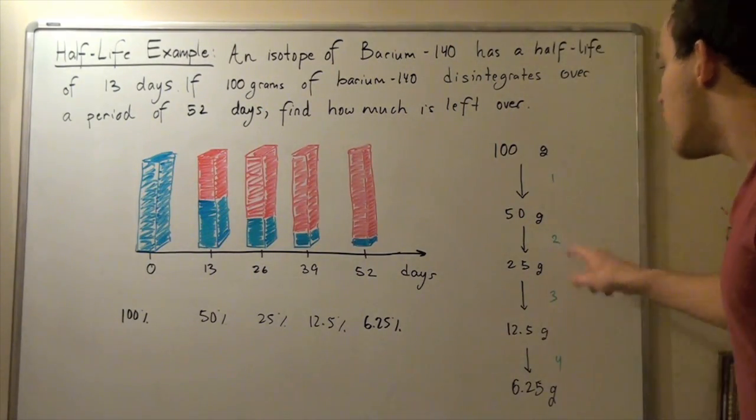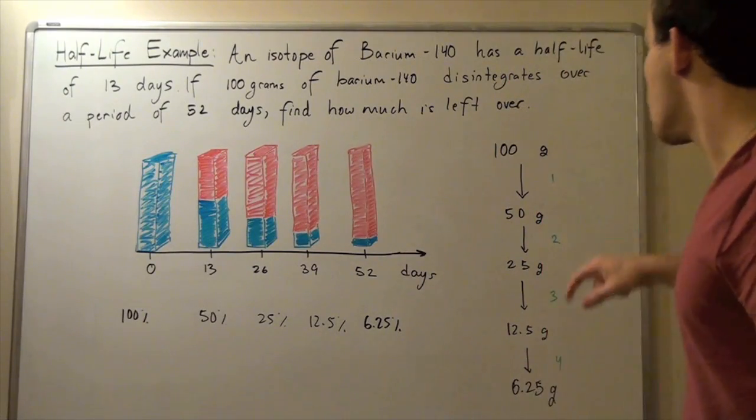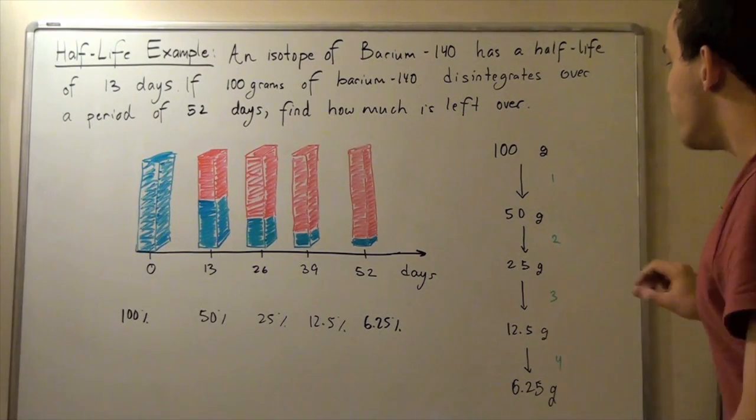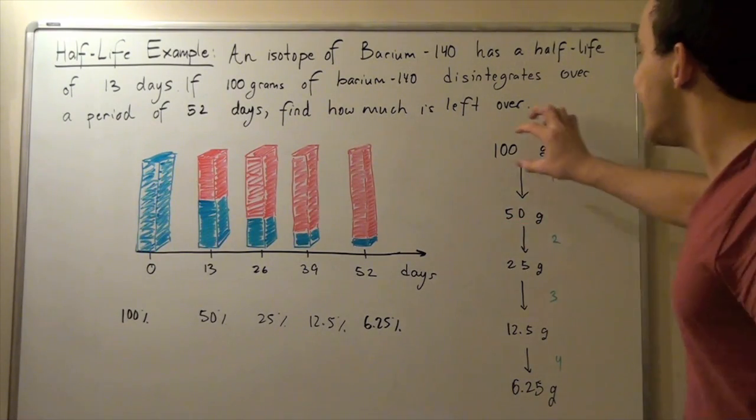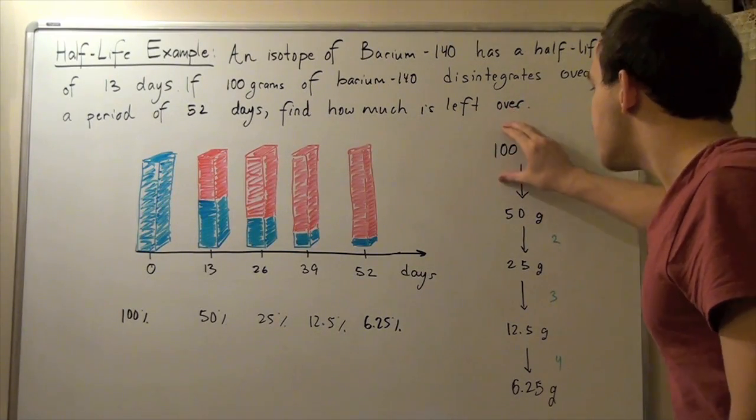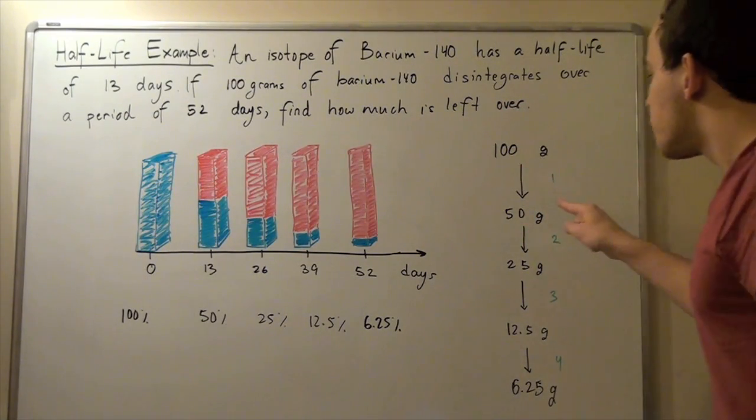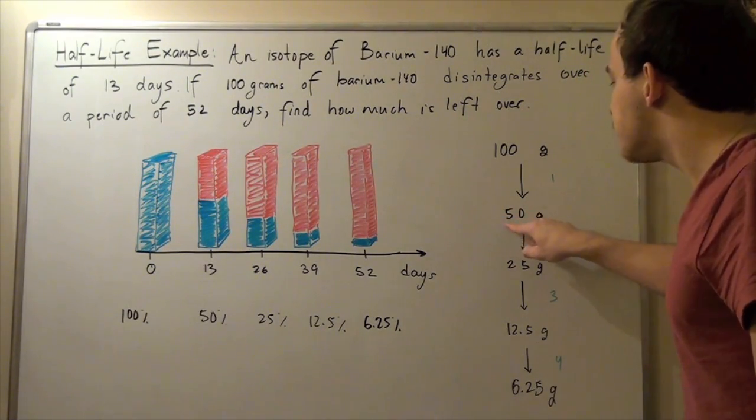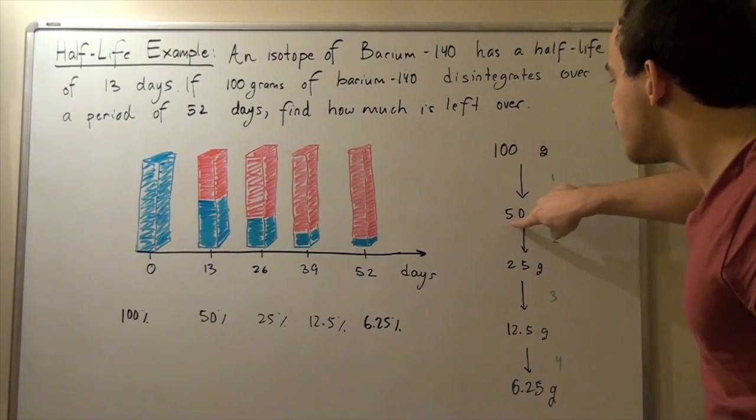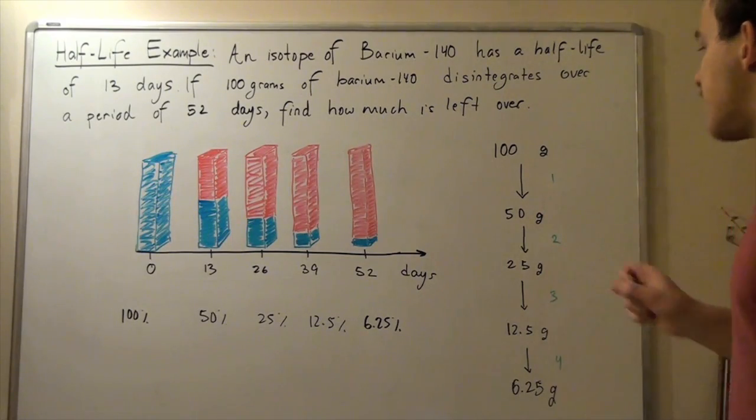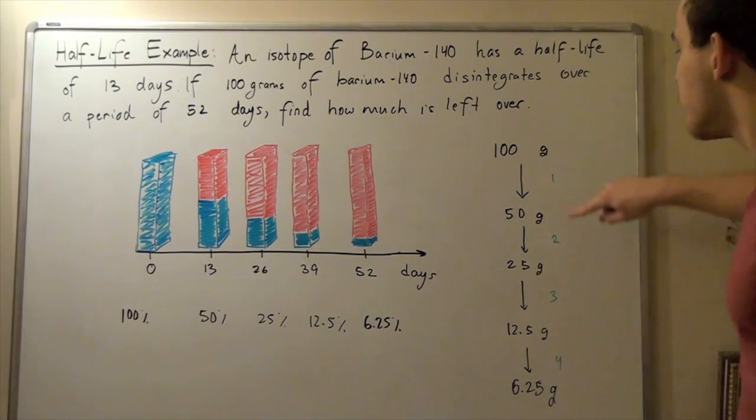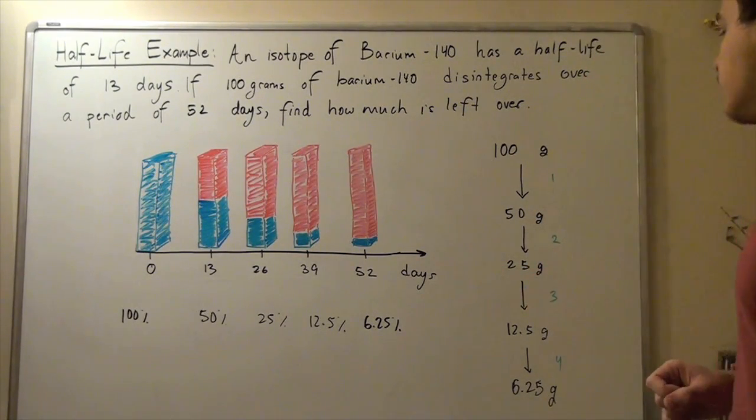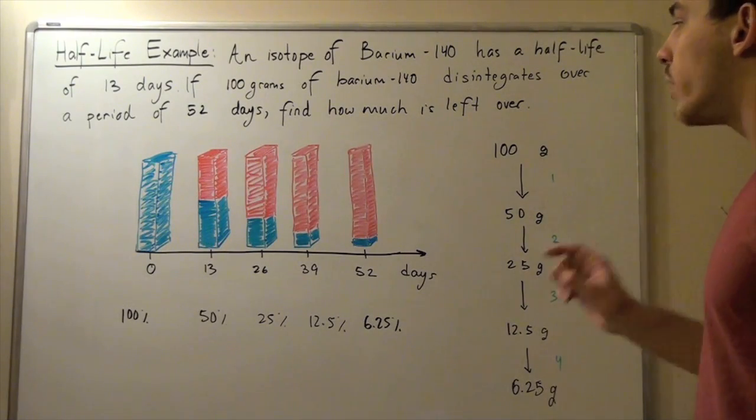So what happens after two half-lives? So after 13 more days, or 13 plus 13, 26 days. Well after 26 days, we have half of this amount. Initially we're looking at this amount, and then this becomes 50 grams. And now we look at this as if this was our initial amount. So now we're taking 50% not of this guy, but of this guy. So 50% of this, when one more half-life occurs, when 13 more days pass by, we have 50% of 50 grams. So that means we will have 25 grams left over after two half-lives or 26 days.